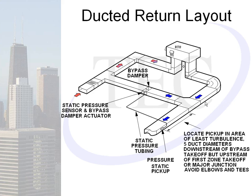We want to avoid the temptation to install the bypass duct between the supply and return drops, as that will prevent supply air from mixing properly with return air and cause hot and cold pockets across the evaporator coil and heat exchanger. Off the supply, we want aerodynamic fittings, and then downstream of the first or second bend, place the T with the bypass duct. The pressure pickup location is critical — after the bypass branch but before the first takeoff, approximately two-thirds of the way down the duct, avoiding locations with a lot of turbulence.